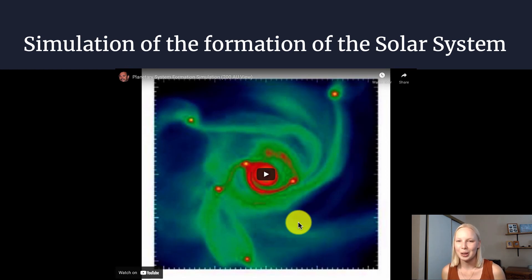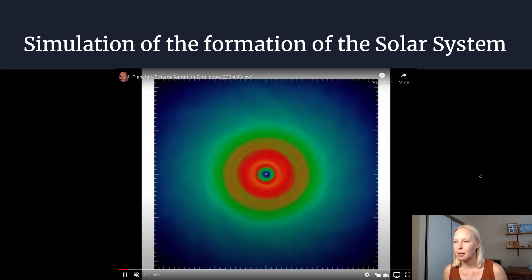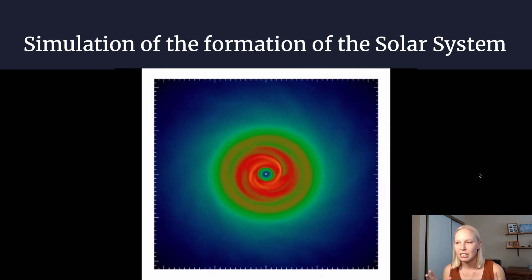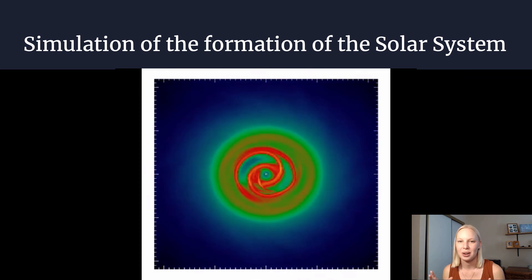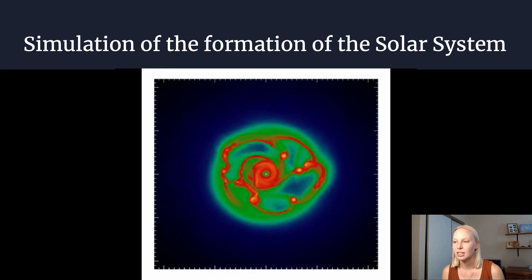So this is really a cool simulation of the formation of our solar system. You'll see that matter starts out fairly evenly spaced. The red zone is higher density of matter, and the cooler colors are lower density.